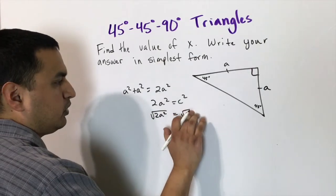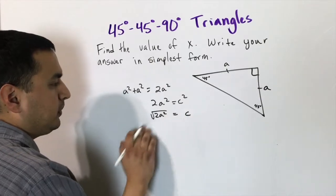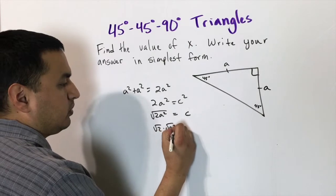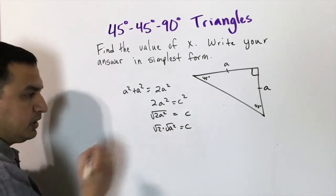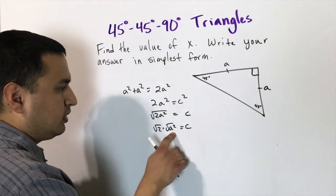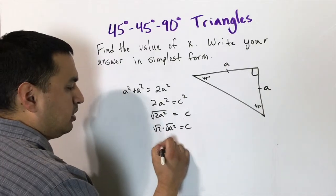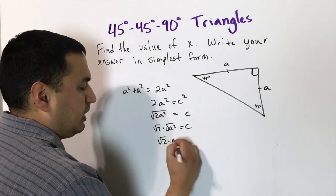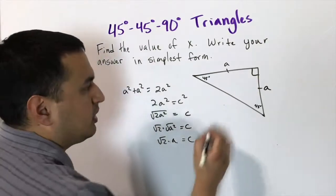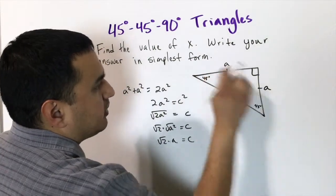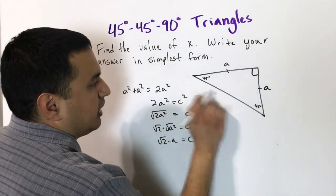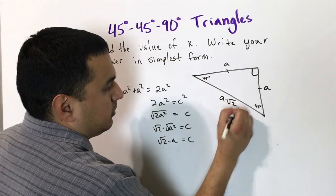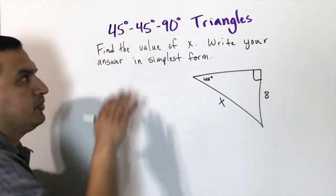Taking the square root of both sides, the square root and square cancel out on the left. On the right, we get the square root of two times the square root of a², and since the square root of a² is just a, the hypotenuse equals a times the square root of two. So if the legs are length 'a', the hypotenuse is always a√2.